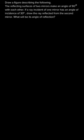In this question we need to draw a figure as described by the given conditions. The reflecting surfaces of two mirrors make an angle of 90 degrees with each other. If on one surface the angle of incidence is 30 degrees, we need to draw the reflected ray from the second mirror and determine its angle of reflection.